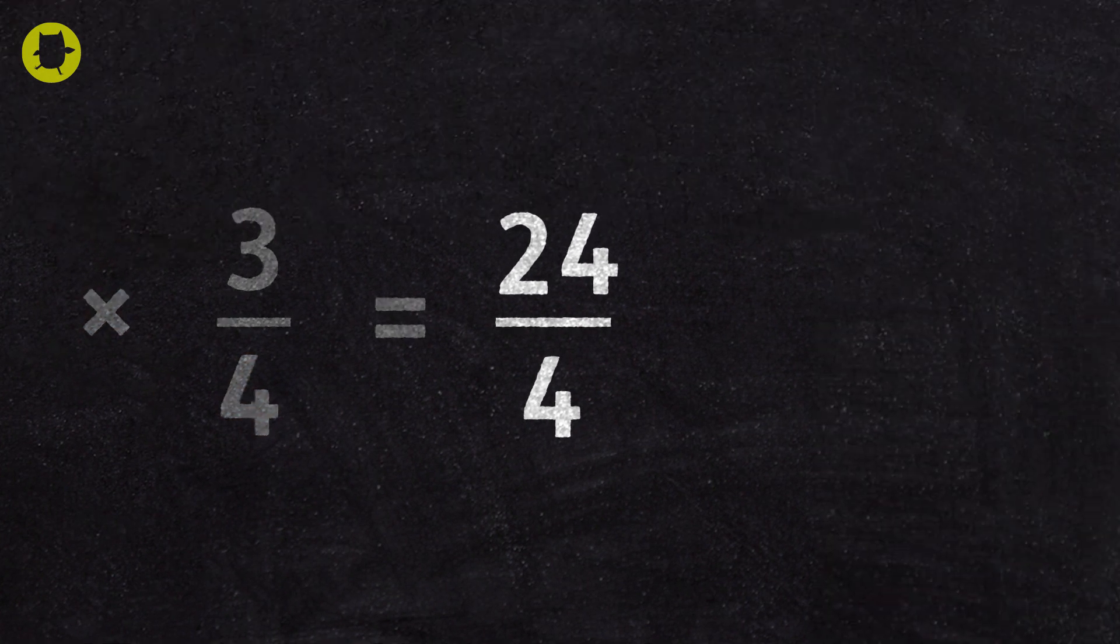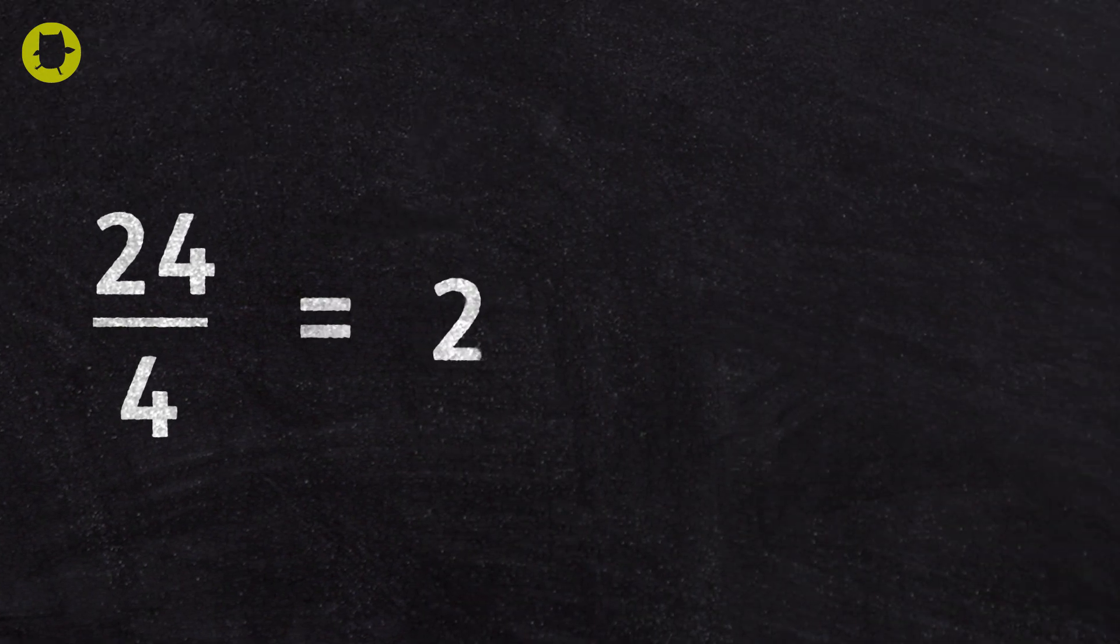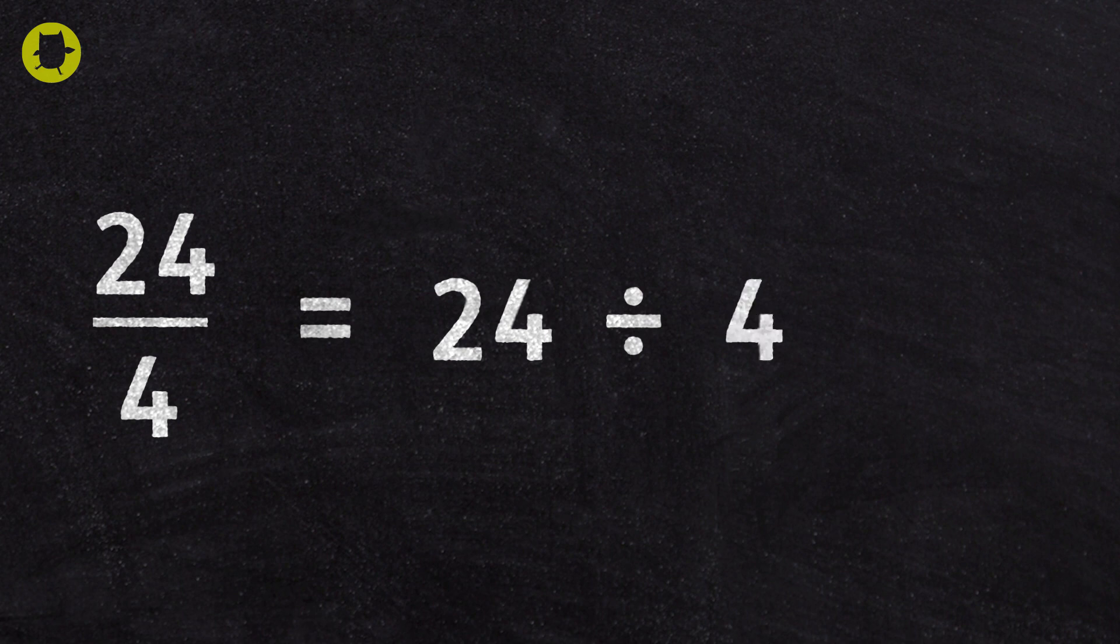Then simplify. Twenty-four divided by four is six.